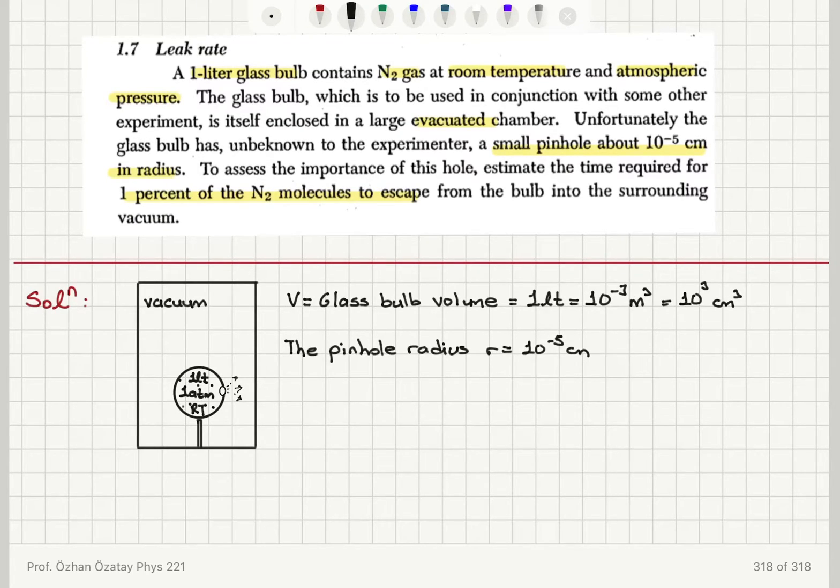So I can calculate the pinhole area now. The pinhole area will be pi r squared. So the number of molecules that hit the pinhole per second will be j pi r squared, where j is the molecular flux, which is the number of molecules hitting a unit area per second. The area is pi r squared, so it will be j pi r squared.